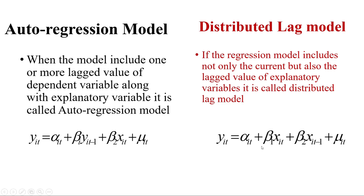For example, here in the equation you can see that this is an independent variable, and beta 2 * X(t minus 1) is the lag value of that variable. So if you use the lag value of any independent variable as another independent variable — like here, this is an independent variable and its lag value has been taken as another independent variable — then the model is called a distributed lag model.